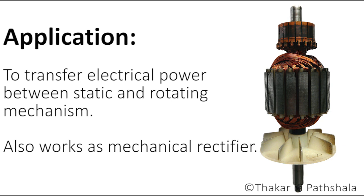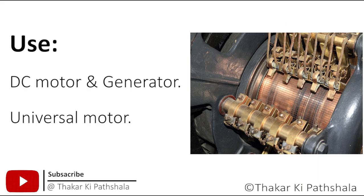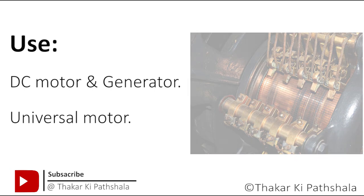Which means it can convert AC power to DC or DC power to AC. Split ring or commutator are used in DC motors, DC generators, and some universal motors.